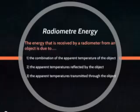The energy that is received by a radiometer from an object is due to the combination of the apparent temperature of the object, the apparent temperatures reflected by the object, and the apparent temperatures transmitted through the object.